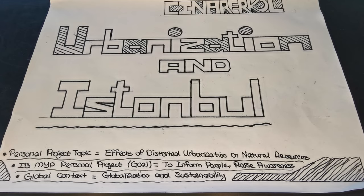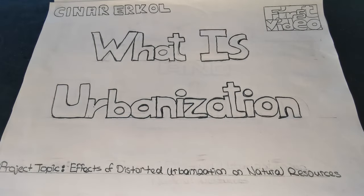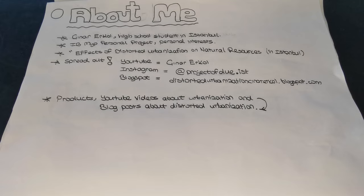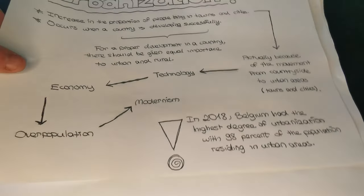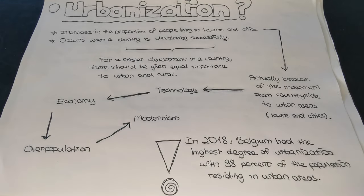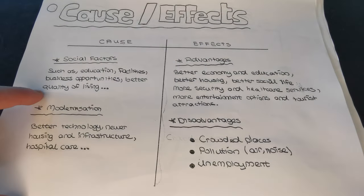First, let's do a little review of my project and summarize the whole project. In the first video I talked about what is urbanization, my personal project, the IBMYP, and the effects of distorted urbanization on natural resources. Then I talked about the meaning of urbanization — increasing the proportion of people living in towns and cities — and the connection between overpopulation, economy, and modernization. Then I talked about the causes and effects of urbanization.